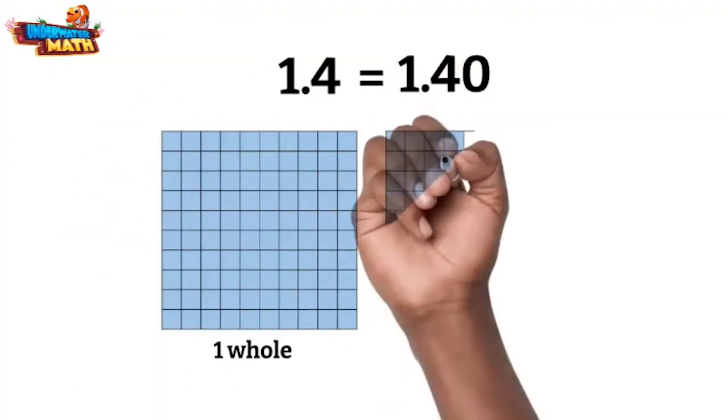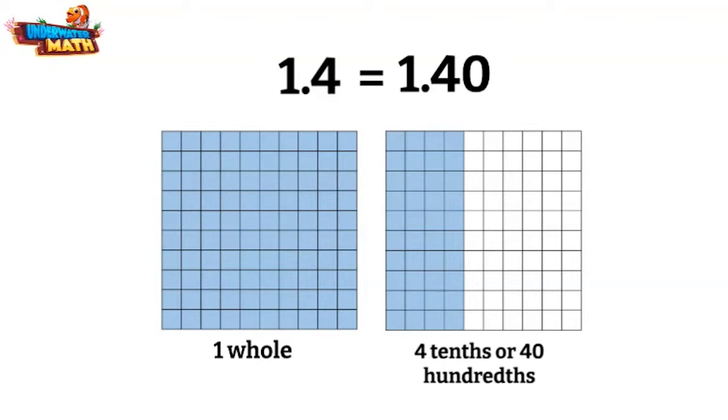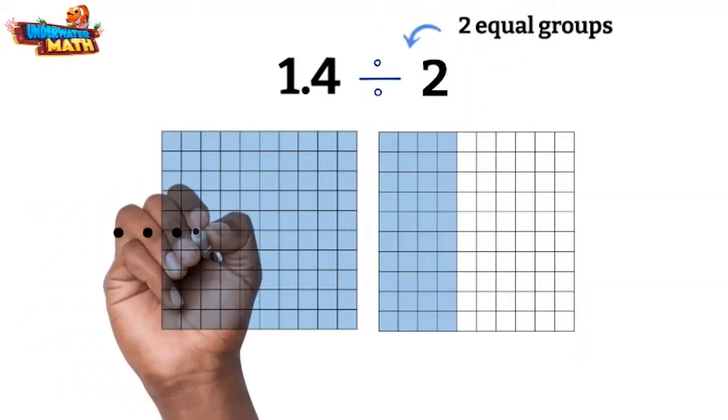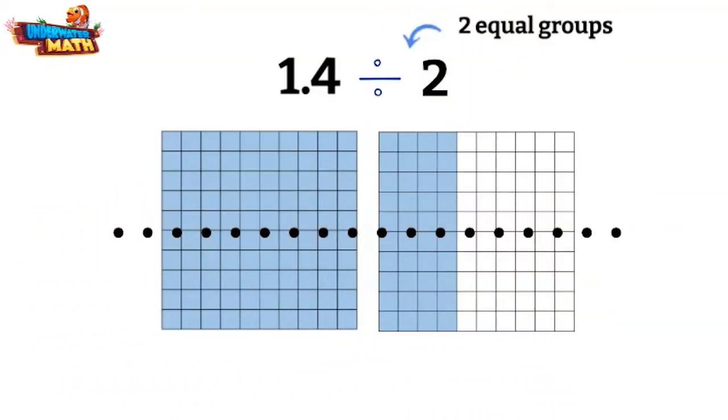Here's one whole and here is 4 tenths or 40 hundredths. Let's say we want to divide this decimal by 2. This means we are splitting it into two equal groups. So if I split this model in half, I have two groups that have the same number of hundredths in each.